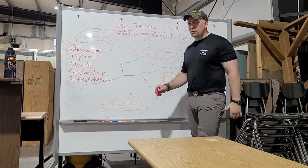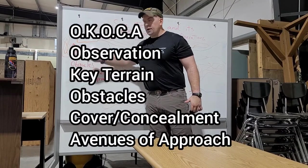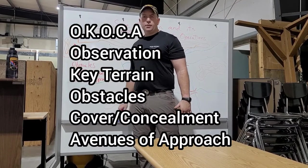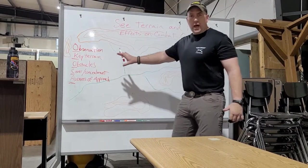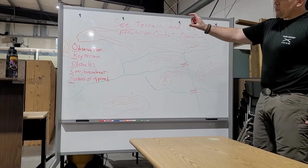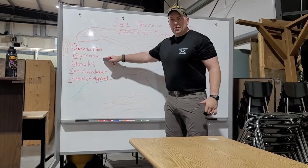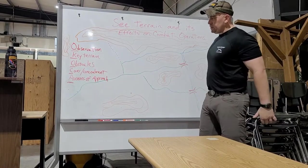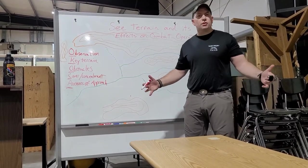ACOCA stands for: Observation, Key Terrain, Obstacles, Cover and Concealment, and Avenues of Approach. These are mental cues so when you look at a map you ask: Do I have advantage on observation? Where is the key terrain? Where are the obstacles? Where is there cover and concealment? Where are the avenues of approach? Unfortunately, if you just put this on a map it doesn't really do anything for you.